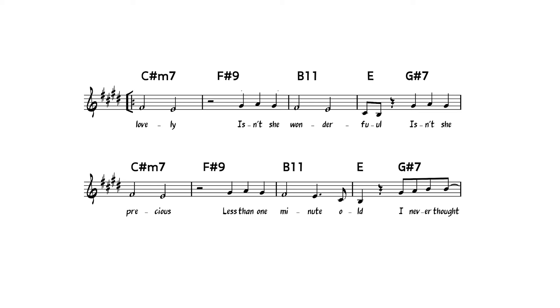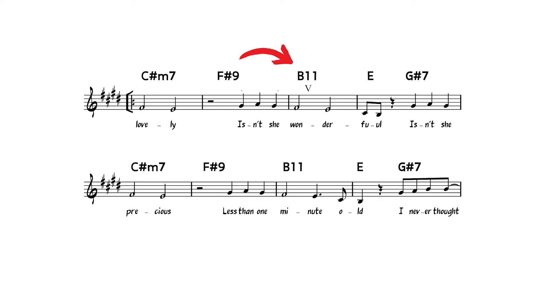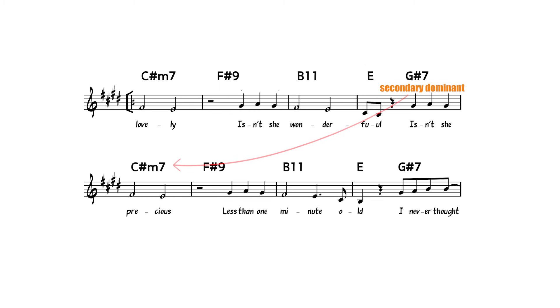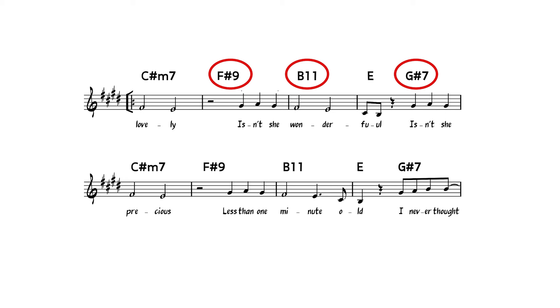The dominant chord has within it — again because of that tritone and that unstable structure — a pulling power that we as songwriters and composers can really leverage to create motion and momentum in our song. Going back to Isn't She Lovely through the lens of this pulling power, you'll see a pattern: we start at the C sharp minor, go to the dominant 2 chord, which is pulling us to that 5 chord, creating a 5-1 relationship between F sharp and B. The B11 is pulling us to the 1 chord, the home chord. That dominant 3 G sharp 7 is pulling us back to the C sharp minor to start the cycle again. Each of those three dominant chords has a pulling power that keeps the whole cycle going round.